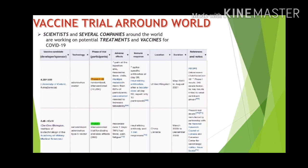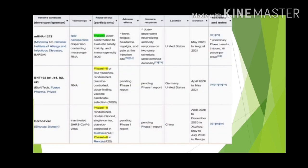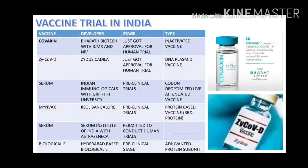Vaccine trials around the world: Scientists and several companies around the world are working on potential treatments and vaccines for COVID-19. The first vaccine under phase 2 of trial is AstraZeneca by the United Kingdom. Other vaccines include AD5N-CoV under phase 2 by China, and Coronavac under phase 1 by China. Vaccine trials in India: Many pharmaceutical companies and researchers are working on a vaccine for coronavirus. India's first indigenous COVID-19 vaccine, Covaxine, developed by Bharat Biotech, has successfully entered human trials. Other vaccines being prepared in India include ZYCOVD, Serum, and Biological E.